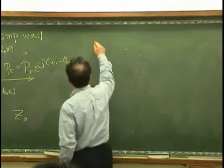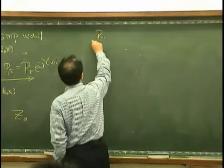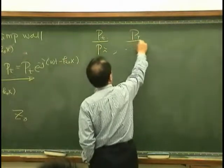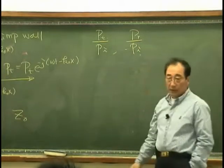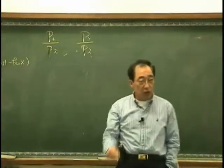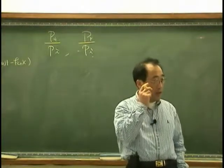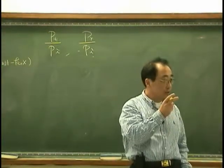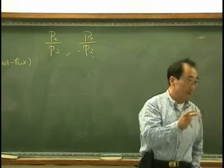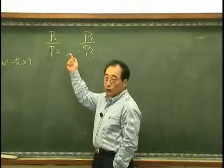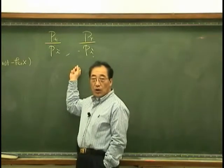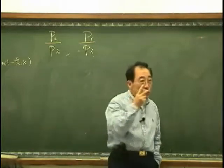Essentially, we want to know the ratio between PT and PI, and PR over PI. That means we need two equations. If you want to know two unknowns, then we need two equations.